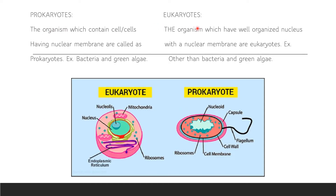Prokaryotes are organisms whose cells lack a nuclear membrane. Examples are bacteria and blue-green algae. This is a picture of prokaryotes. Eukaryotes are organisms which have a well-organized nucleus with a nuclear membrane. Examples include organisms other than bacteria and blue-green algae. This is a picture of eukaryotes.